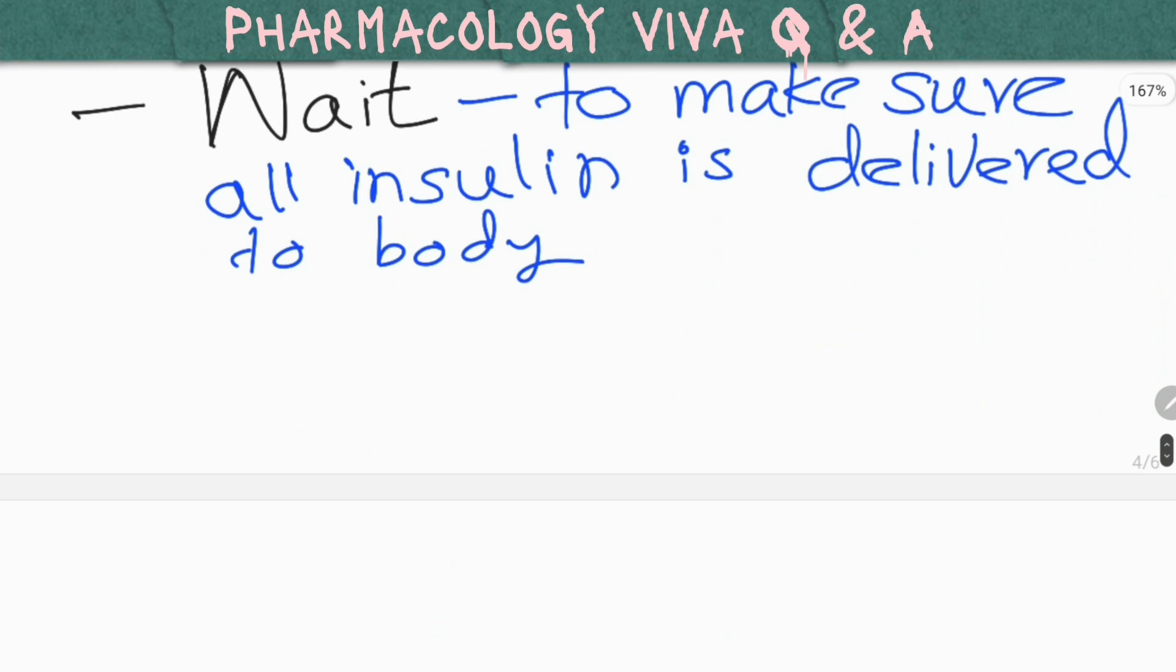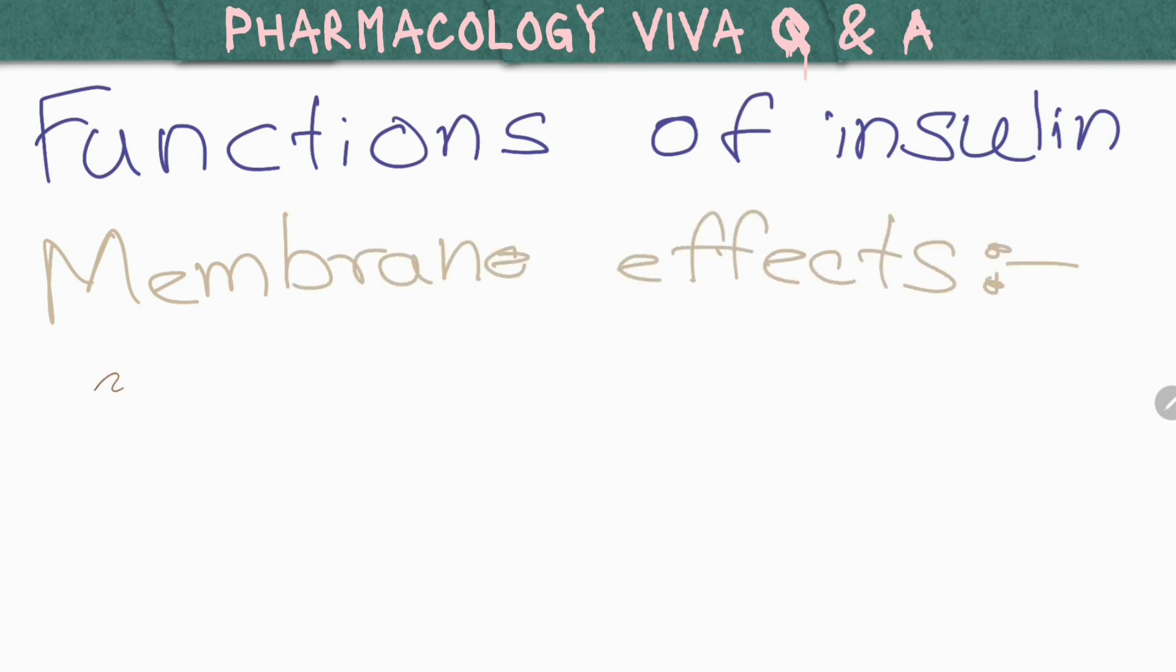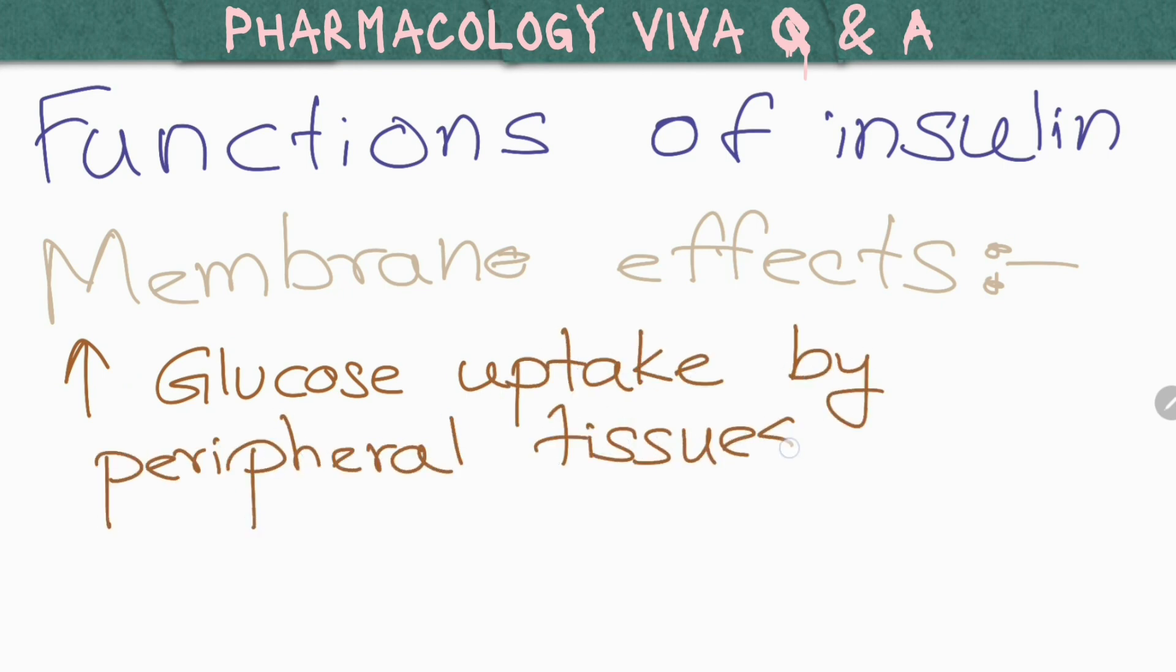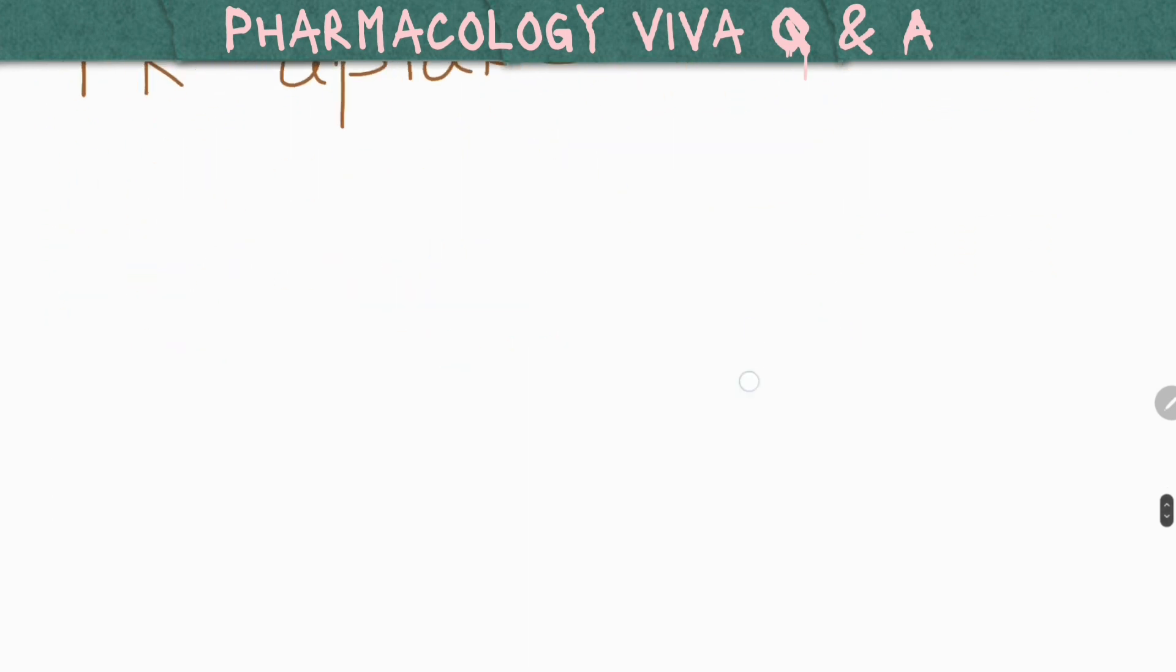What are the actions of insulin in our body? The actions of insulin can be categorized into two: membranous effects and intracellular effects. Membranous effects are increased glucose uptake by peripheral tissues, increased amino acid uptake, and increased potassium uptake into cells from plasma.